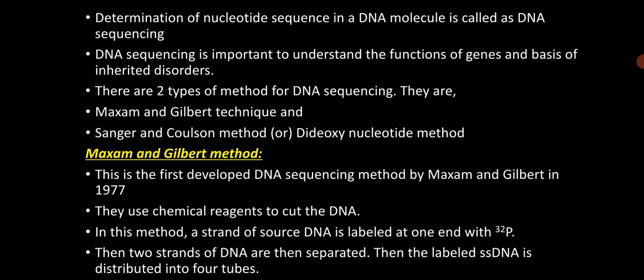The diseases which transfer from one generation to another generation are called genetic disorders. There are two types of methods for DNA sequencing: the Maxam and Gilbert method, and the Sanger and Coulson method. First of all we will see the Maxam and Gilbert method.